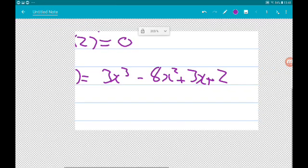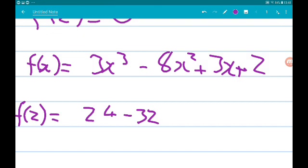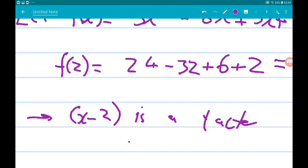And then f of 2 is going to be 3 times 8, which is 24, minus 8 times 4, which is minus 32, add 6, add 2. Now, 24 add 6 add 2 is 32. Minus 32 does indeed give us 0. Therefore, x minus 2 is a factor of f of x.